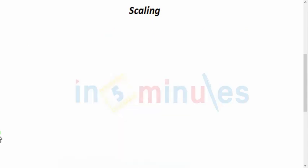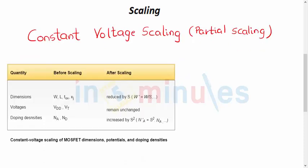Let's see some parameters associated with constant voltage scaling. As the name suggests, this is partial scaling, so all parameters are not going to scale down. The channel length, junction depth, and gate oxide thickness are reduced by a factor s, but the voltages, the supply voltage and the threshold voltage, remain unchanged. This is the difference.